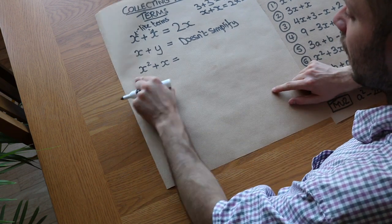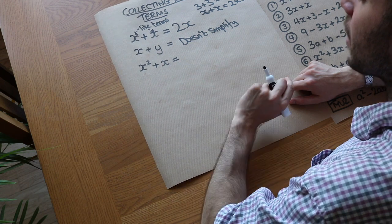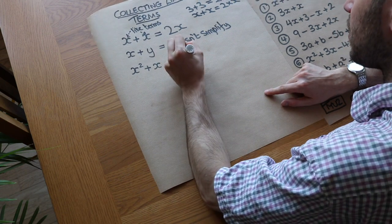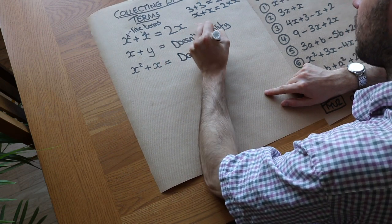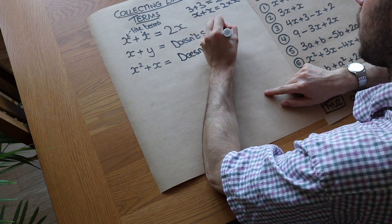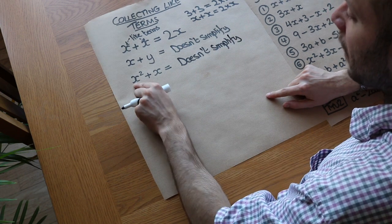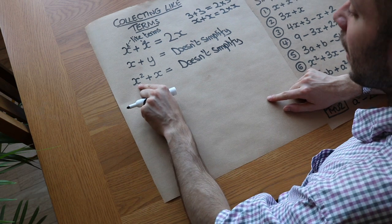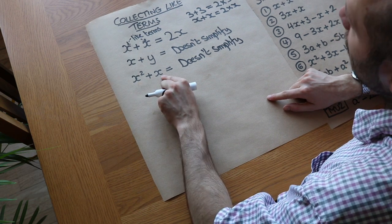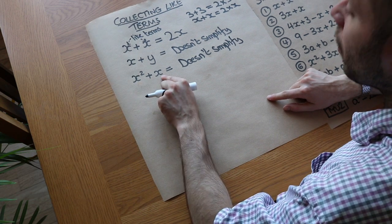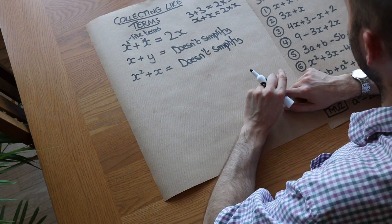What about this? Are we allowed to collect these together? They both involve an x, but the answer is again that it doesn't simplify. The reason is that even though they both involve an x, they involve different powers. One x is squared and the other is not squared, and therefore they're not like terms — we can't collect them together.